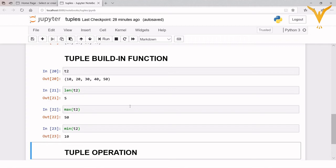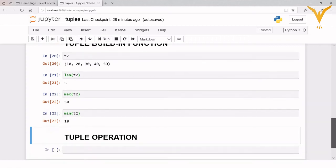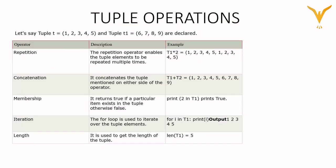Next we are going to see tuple operations. There are five operations. First is repetition: the repetition operator enables tuple elements to be repeated multiple times. Then concatenation, which is used to merge two different tuples. Then the membership operator, which returns true if a particular value exists in the tuple, otherwise false. Then the iteration operator, which uses a for loop to iterate over and print values from the tuple. Last is length, which calculates the length of the tuple.